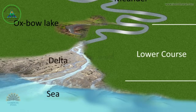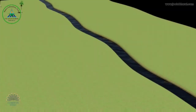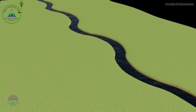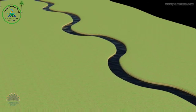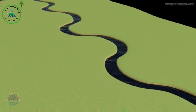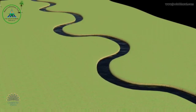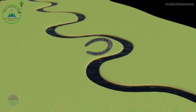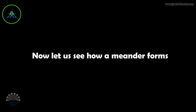Oxbow lakes are conspicuous features in the lower course of a river, apart from deltas where the river drains into the sea. Meanders are formed in the middle course of a river. The river flows through an almost flat plain and, as water flowing under gravity seldom flows straight, a winding course develops. The irregularities of the ground force the river to swing in great S-shaped curves, forming horseshoe-like loops called meanders.